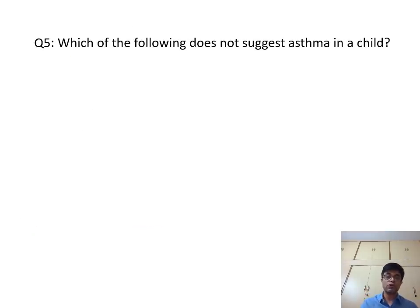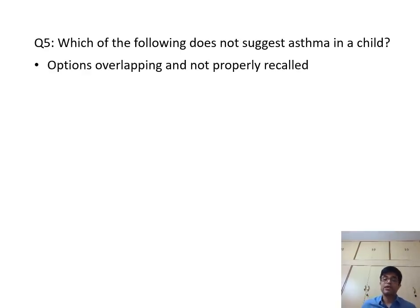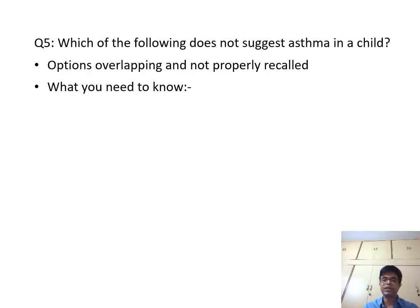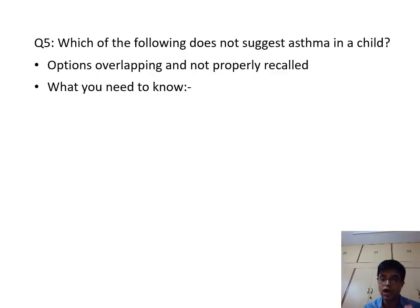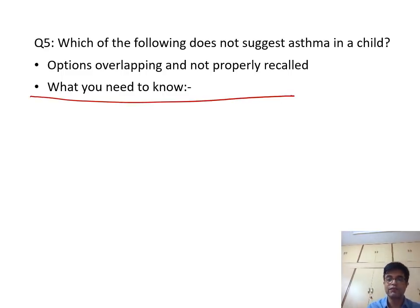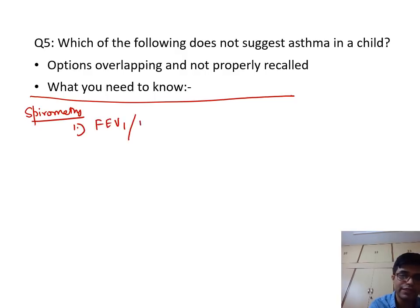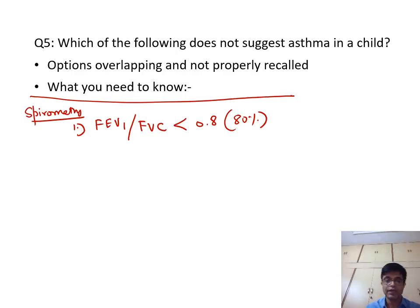Question number 5: Which of the following does not suggest asthma in a child? Asthma in a child is tricky. Nelson says these things help in diagnosis. First, on spirometry in asthma, the FEV1 over FVC ratio is less than 0.8, that is less than 80% of expected. Second, we look for reversibility of the obstruction by checking peak expiratory flow rate or FEV1 before and after giving a bronchodilator like SABA (short-acting beta agonist).